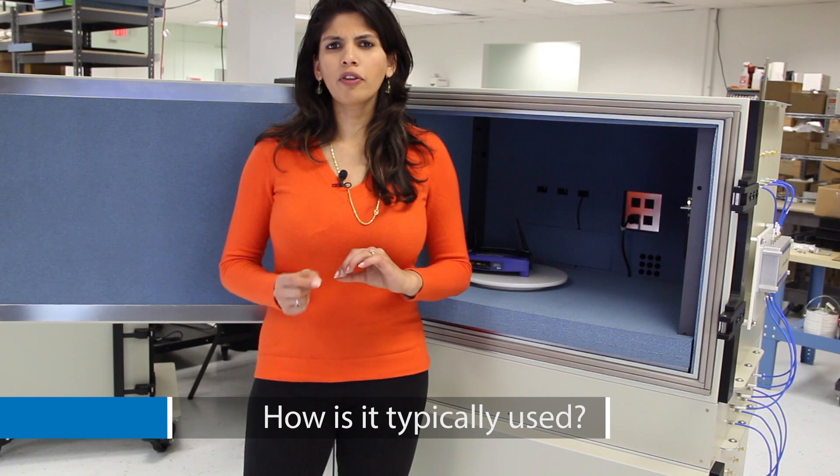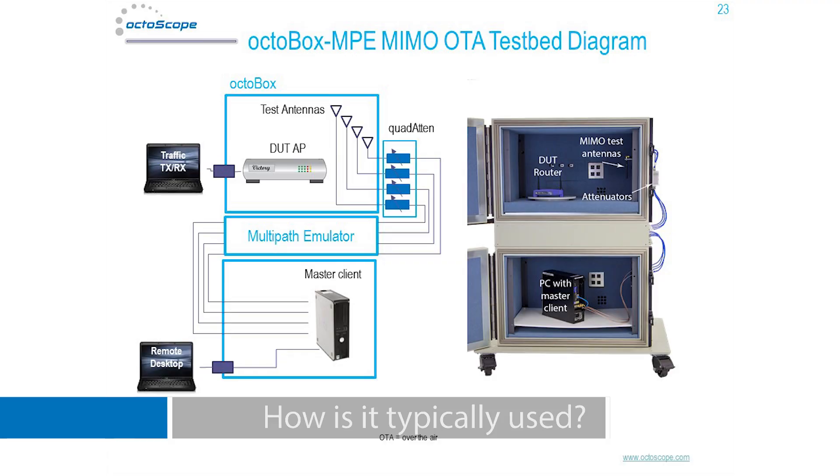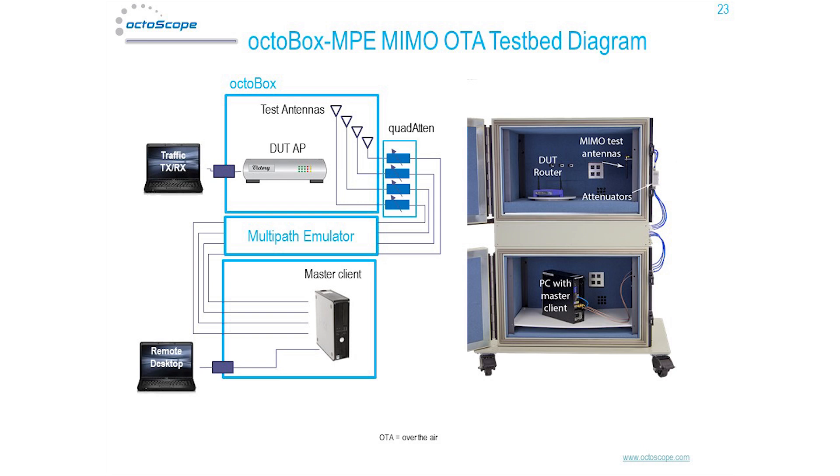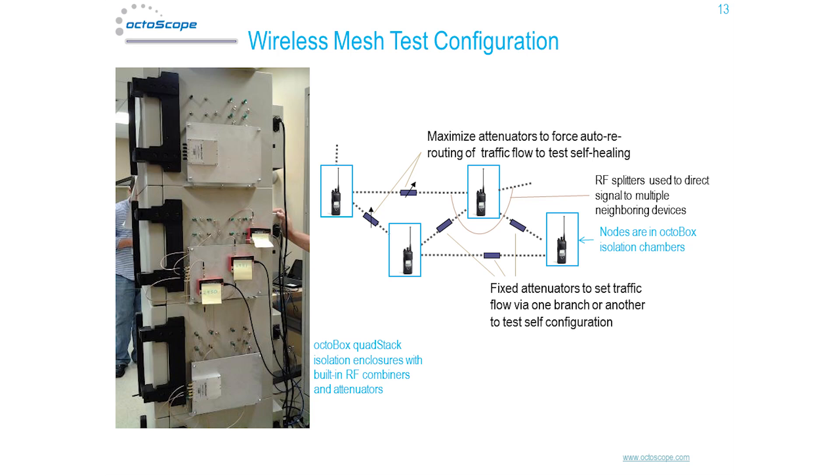Engineers most often use the Octabox to measure throughput of the new 802.11ac or 4G MIMO devices, but the Octabox testbed can be configured for mesh testing, high-speed roaming, and other wireless tests as well.